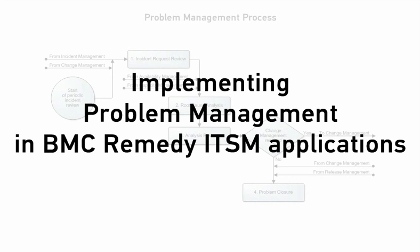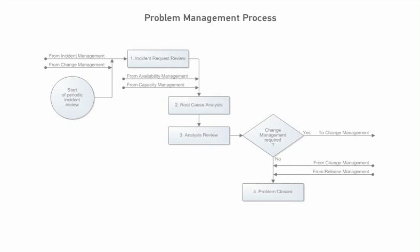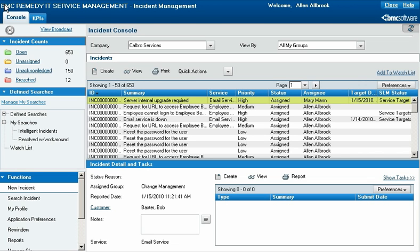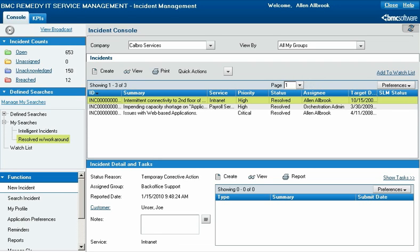Now we'll look at how the problem management process works in BMC Remedy ITSM applications. In this video, the problem management process begins when the problem coordinator initiates an incident request review using BMC Incident Management. From the Defined Searches area of the Incident Console, they create and run a custom search that looks for records not yet linked to a problem investigation and that were resolved with a workaround.